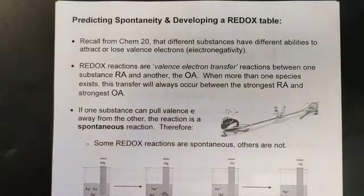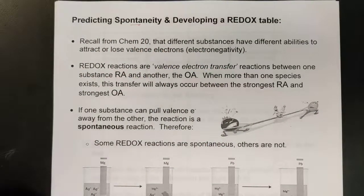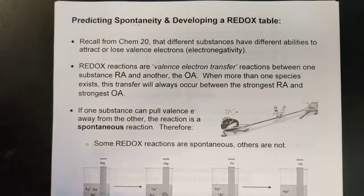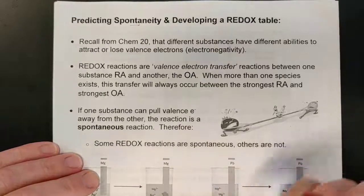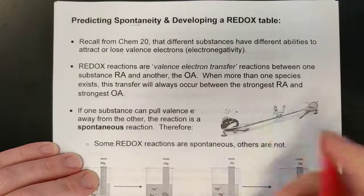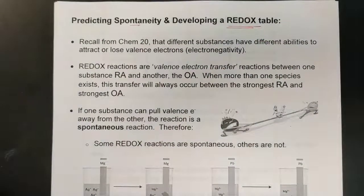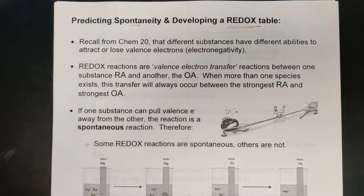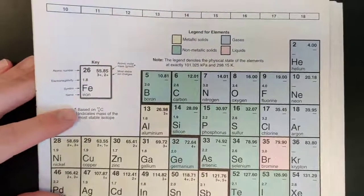One of the first things we're going to look at is the idea of spontaneity — the idea that reactions happen automatically. We know that's likely not always the case; some reactions are easier than others, as a holdover from the thermochemistry unit. What we're going to do is develop a redox table that looks at the relative strength of certain things to both attract or give up electrons. This is something we've done before if you remember electronegativity from chemistry 20.